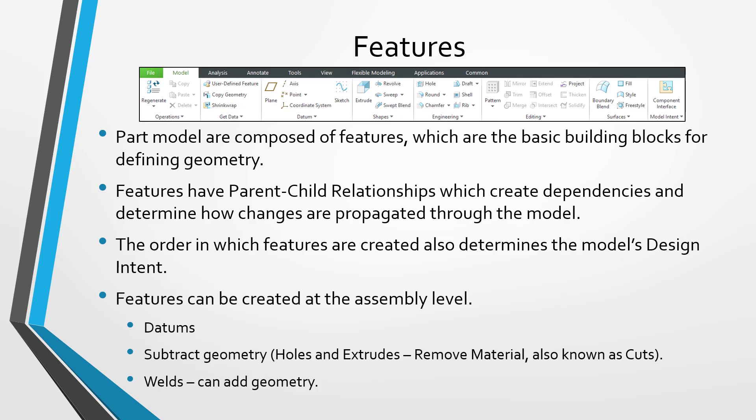Now let's talk about features. A part model consists of features, and features are the basic building blocks for defining geometry in your model. Most of the features are created from the model tab in part mode, which you can see in the image. One important aspect of features is that they have parent-child relationships. Whenever you create a new feature, you have to reference existing features and geometry in the model — that new feature is the child of the entities you referenced, and those referenced entities are the parents.